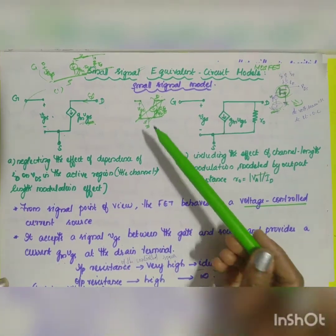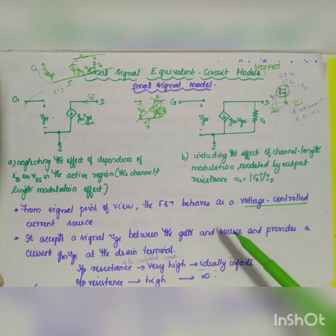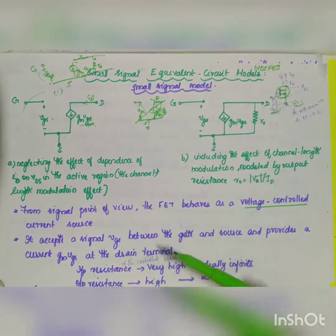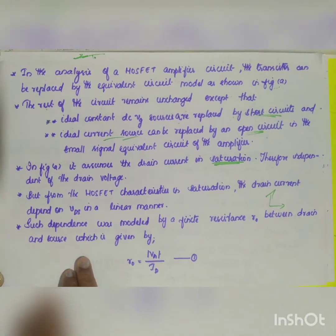What you can write for 6 marks is: from the signal point of view, this FET behaves as a voltage-controlled current source. It accepts a signal VGS between the gate and the source and provides a current GM into VGS at the drain terminal. The input resistance of this controlled source is very high, so we can approximate to infinite. Similarly, the output resistance looking into the drain is also very high, which can be approximated to infinite.